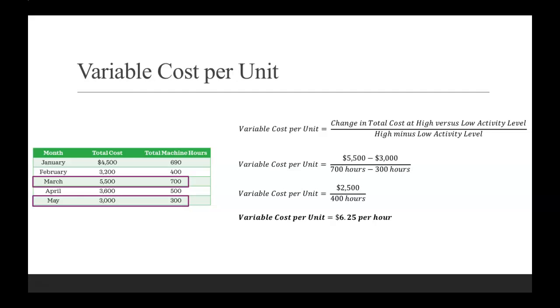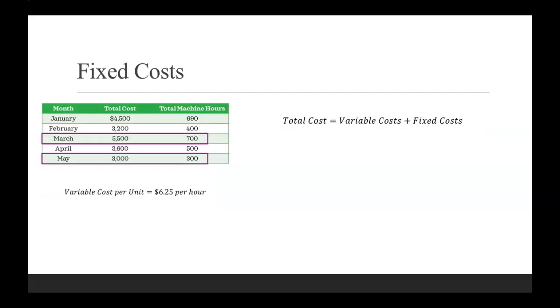Now we can use this variable cost per unit to find our fixed cost amount. Your total cost is made up of your variable costs and your fixed costs. We have total cost and variable cost figured out, we just solve for the unknown.